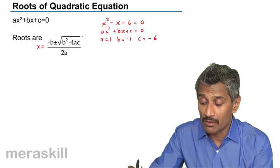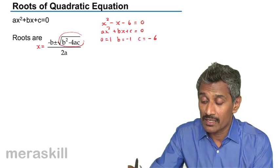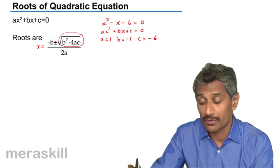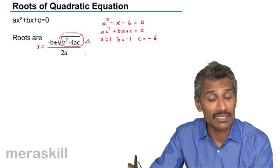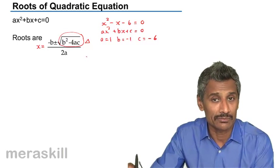This term b² - 4ac is the one that decides the nature of the roots. It's given by the symbol delta and is also called the discriminant.